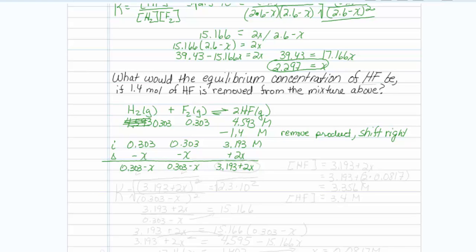Here we go again. The equilibrium expression is products over reactants raised to their coefficients, so my product is represented as 3.193 plus 2x quantity squared, and my equilibrium concentrations at the bottom are 0.303 minus x, and there's 2 of them, one for the H₂ and one for the F₂, so those are also squared, and these must be equal to my equilibrium constant, which is 2.3 times 10 to the second power.